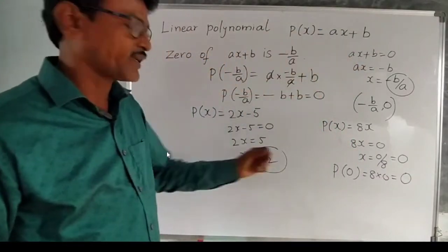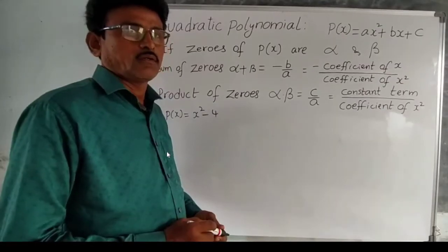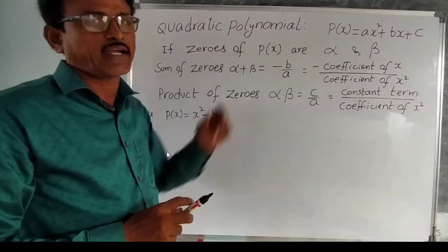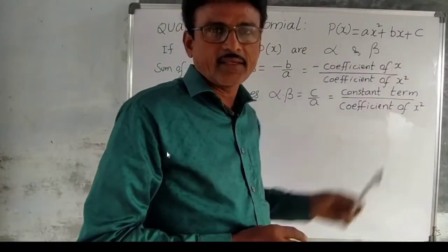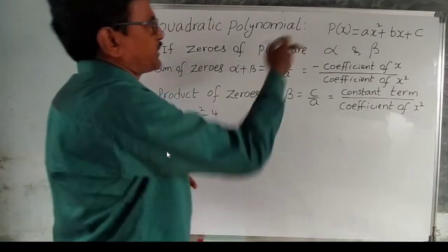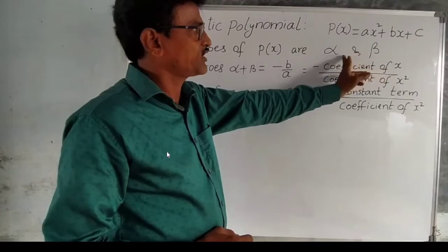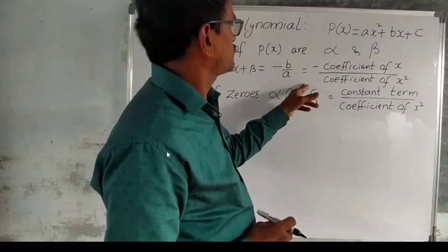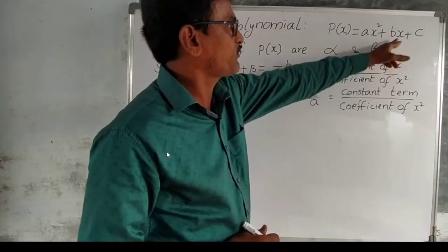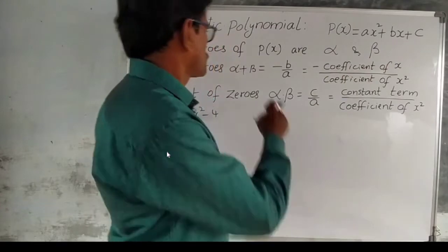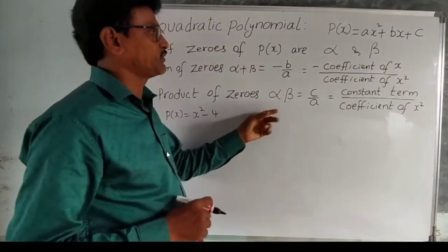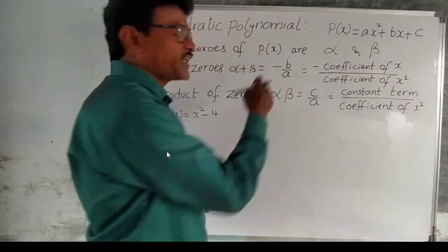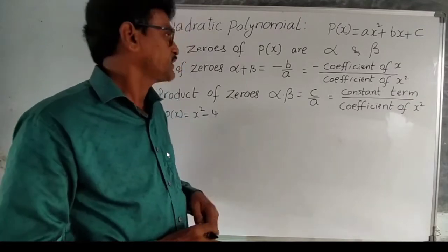Now I will explain the quadratic polynomial. The general form is p(x) = ax² + bx + c. Here a, b, c are real coefficients. If the zeros of p(x) are alpha and beta, then: sum of zeros alpha + beta = minus b by a, which is minus (coefficient of x) divided by (coefficient of x²); and product of zeros alpha × beta = c by a, which is the constant divided by the coefficient of x².